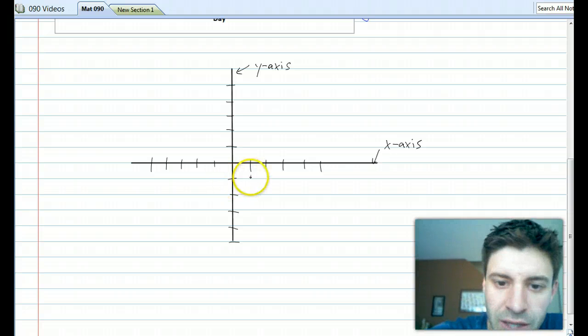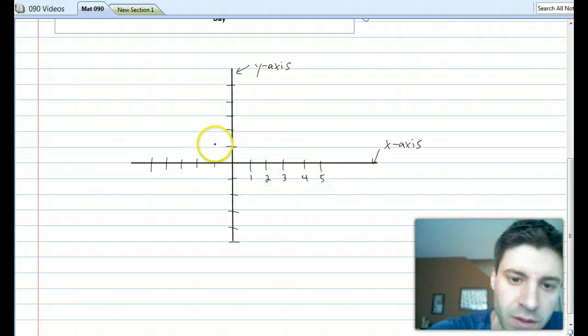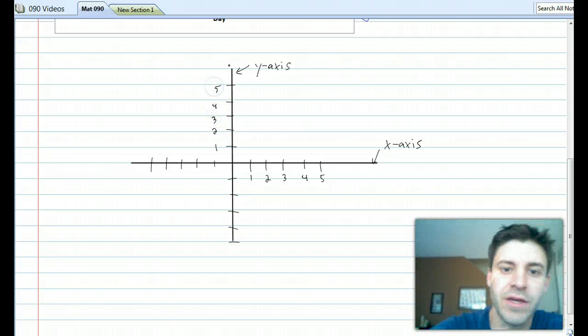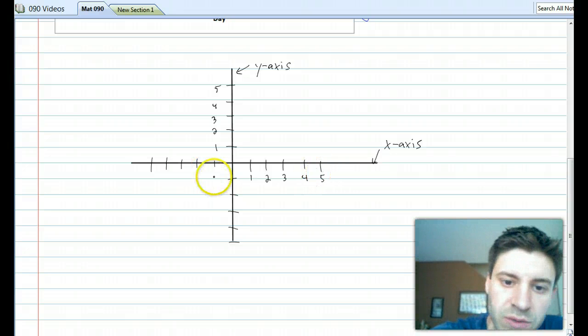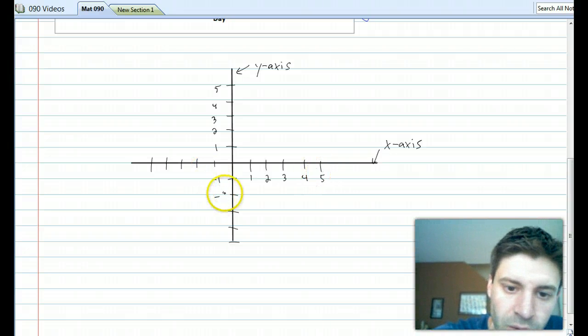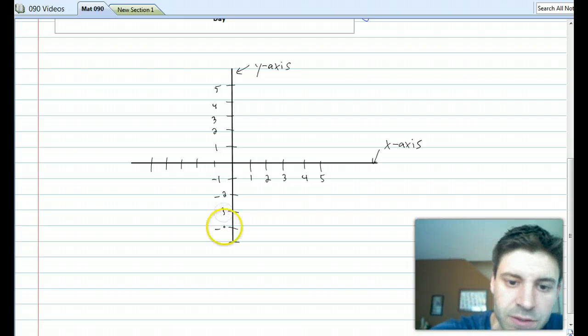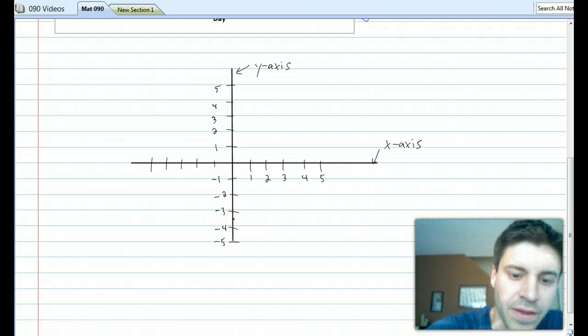Now these tick marks we can label. I'll call them 1, 2, 3, 4, and 5, and 1, 2, 3, 4, and 5. As we go up and right, the numbers increase, but as we go down or left, the numbers decrease, and they actually become negative.